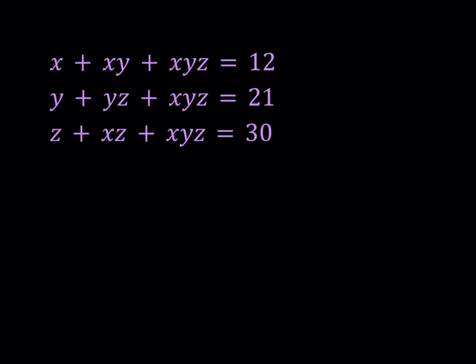Hello everyone. In this video, we're going to be solving a polynomial system. This is a problem by Stanley Rabinovitz. I'll share some links down below. So we have x plus xy plus xyz equals 12, y plus yz plus xyz equals 21, and z plus xz plus xyz equals 30. One of the things that I want you to notice about this problem is that all these equations have the same thing xyz, and other pieces are obviously different.